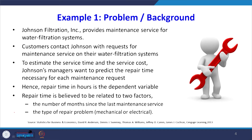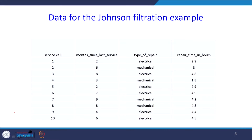The type of repair problem — mechanical or electrical — is the categorical variable. The given data has column 1 as the service call, column 2 as months since the last service, column 3 as the type of repair (electrical or mechanical), and the last column as repair time in hours.